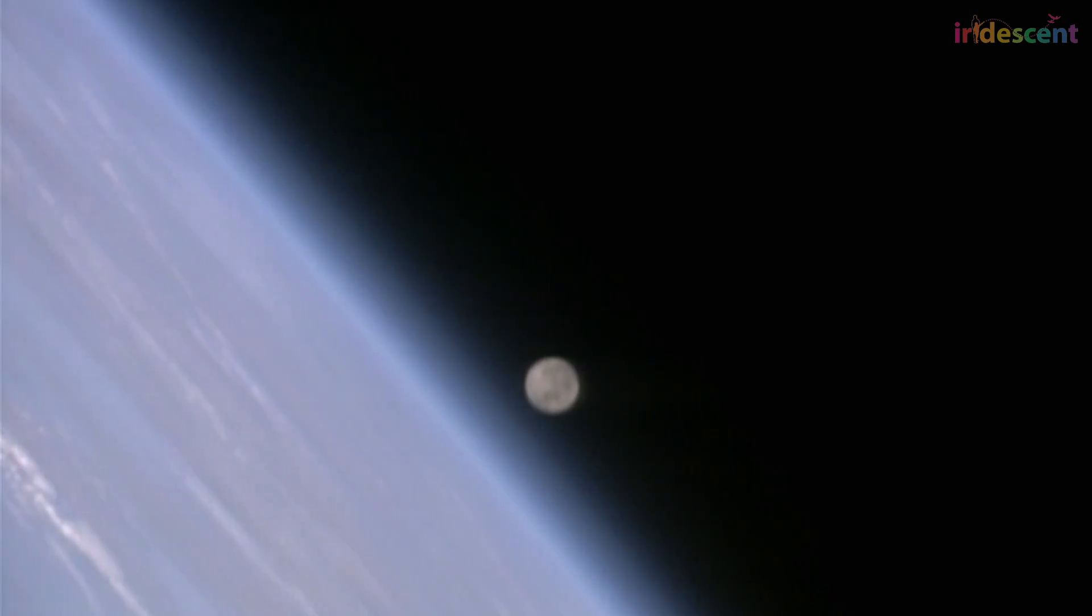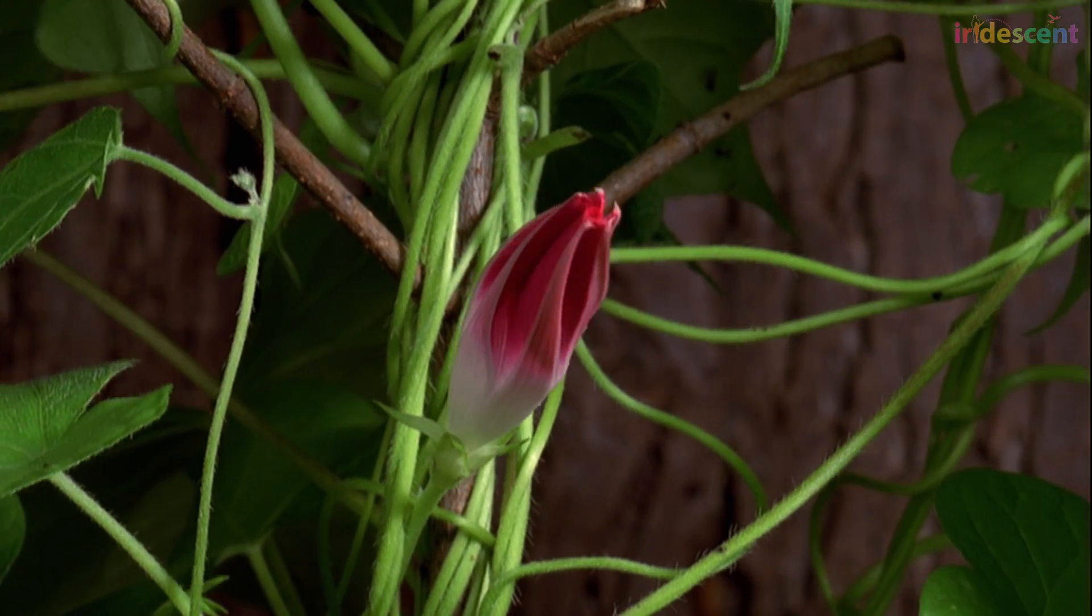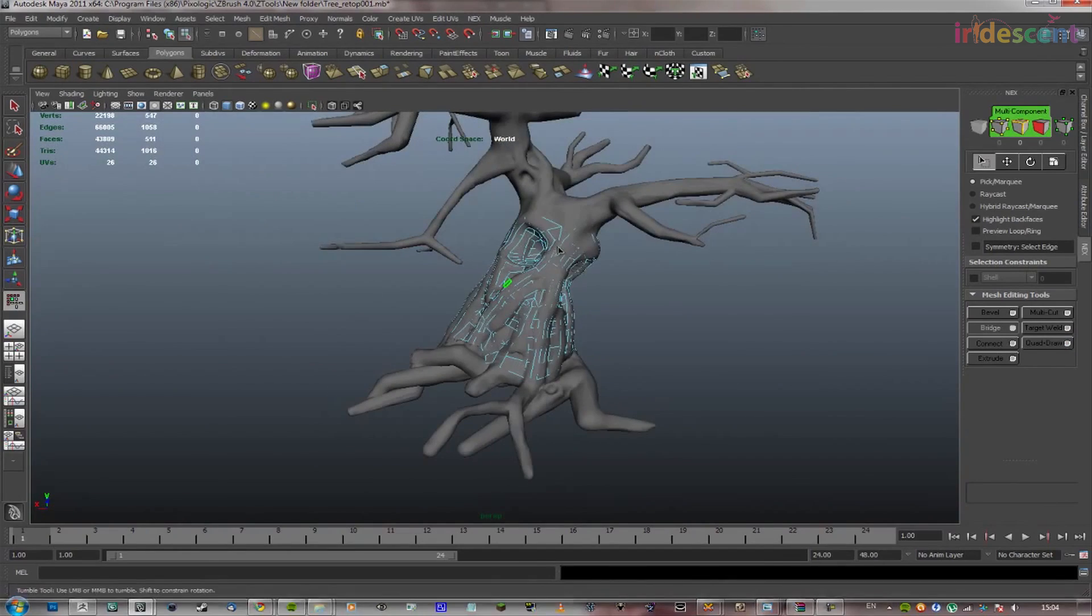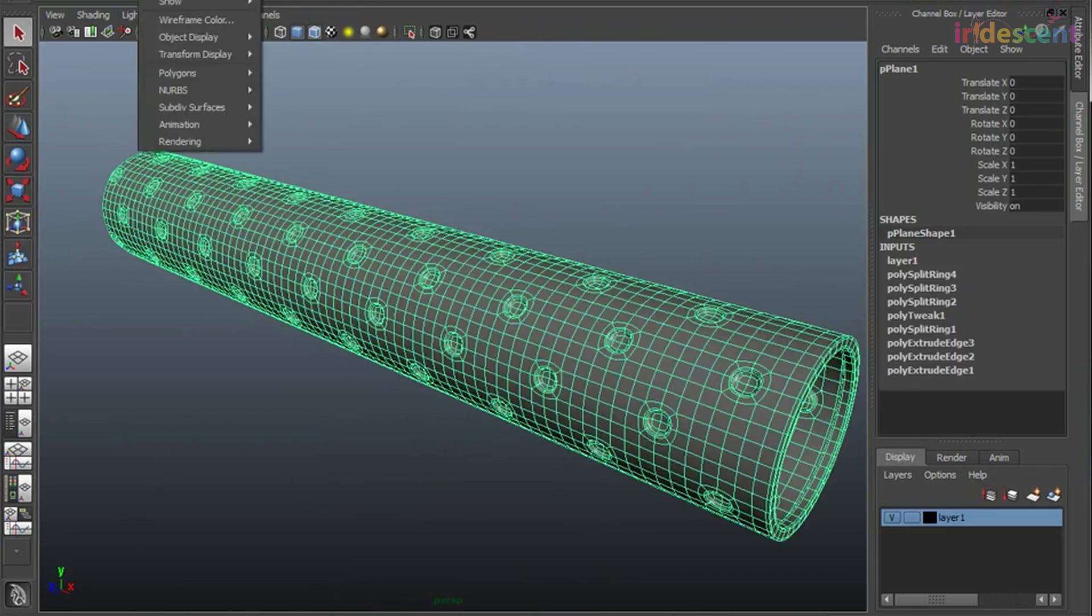To understand physics, you need to simplify. The world has odd shapes full of rough edges, but in physics, we tend to use round cylinders and perfectly frictionless surfaces.